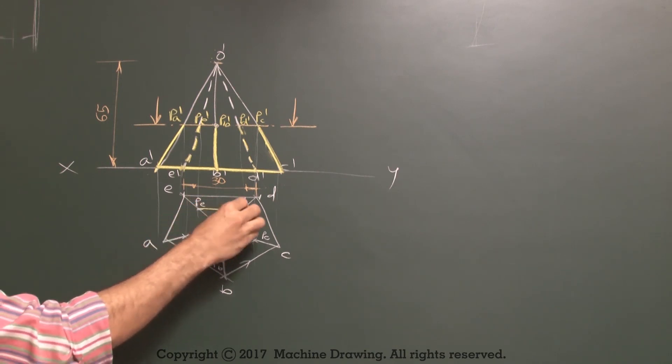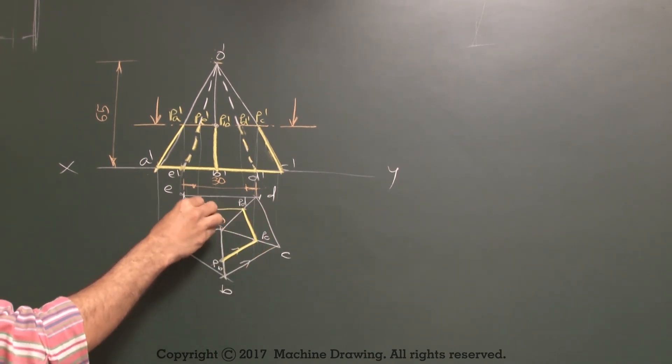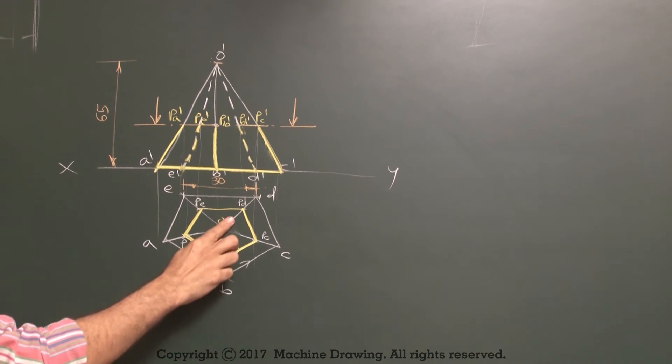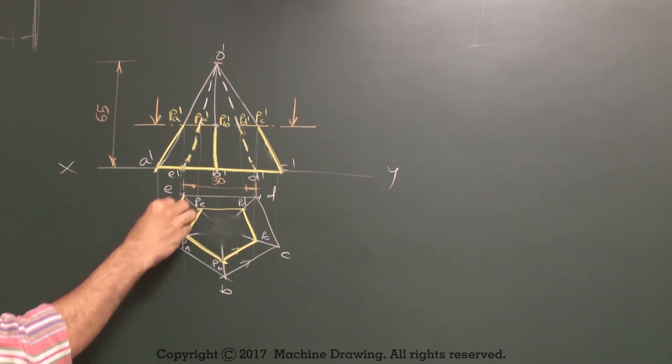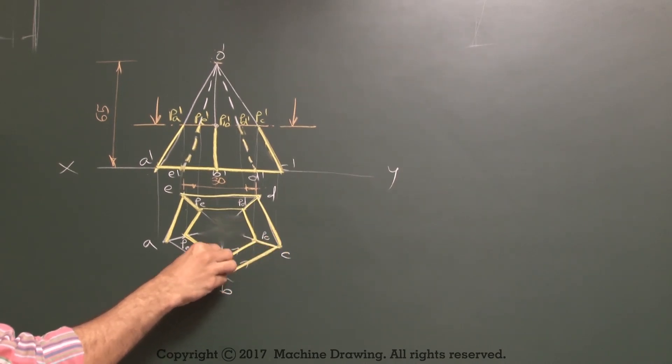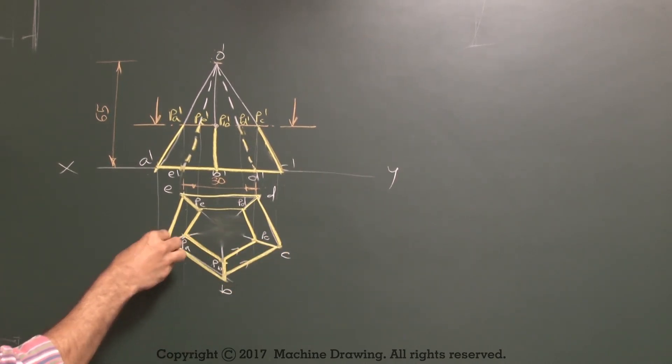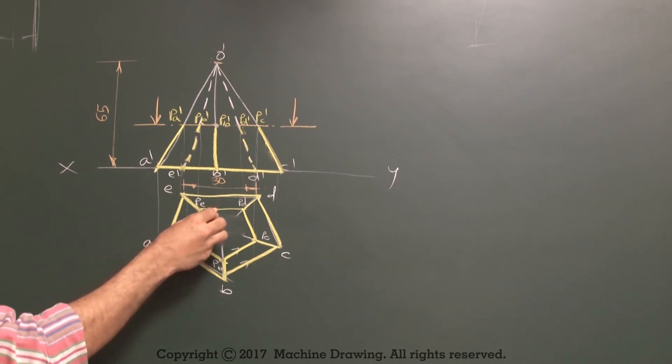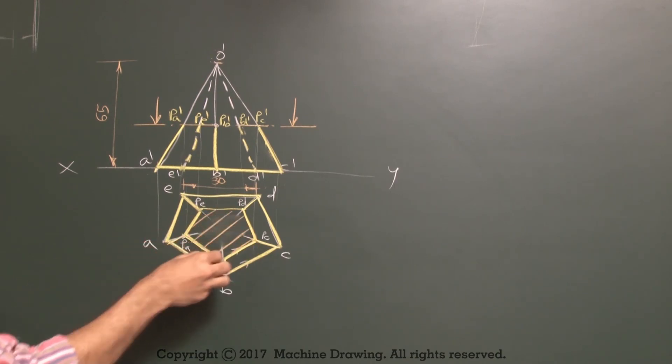Then you join this. So this is the required sectional top view. This will be dark and this will be hatched. So we are done with front view and sectional top view.